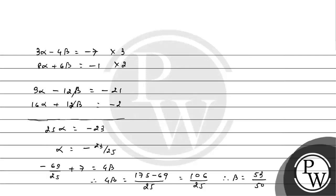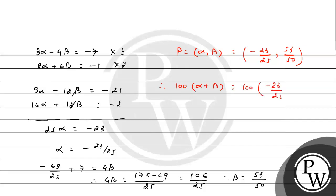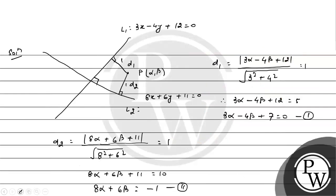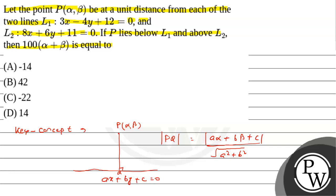So we get point P as (α, β) where α equals minus 23/25 and β equals minus 23/50. Therefore, 100α plus β becomes: 100 times (minus 23/25) plus (minus 23/50) plus 53/50, which gives us 14. This is the required answer and the value is 14, that is option D is the correct option.